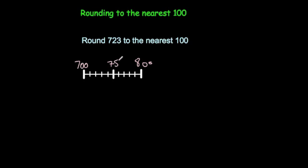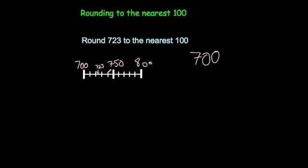On the number line we have 710, 720, 730, 740, 750, 760, 770, 780, 790, and 800. So 723 would be somewhere around here. As you can see, 723 is closer to 700 than it is to 800, so if you're asked to round 723 to the nearest 100, the answer would be 700.